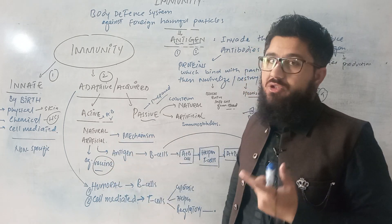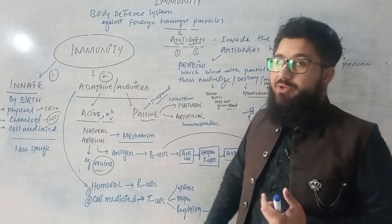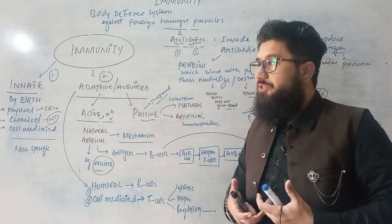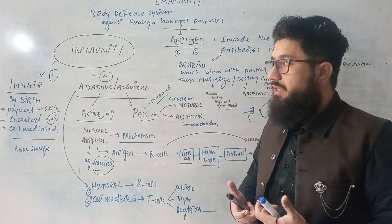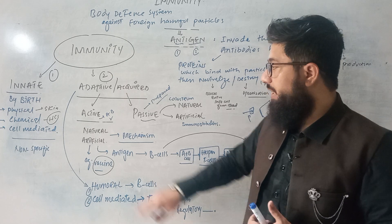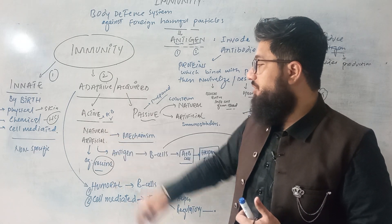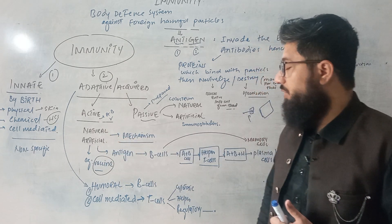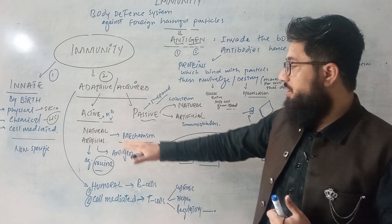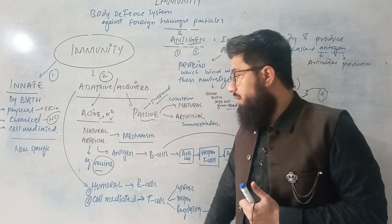So vaccination is the means of producing artificial active immunity in the body. In both natural and artificial active immunity, our own body produces the antibodies — we don't take them from any external source.